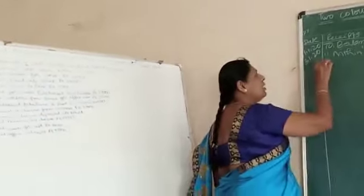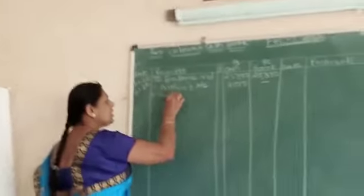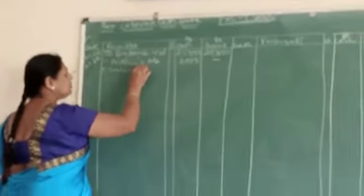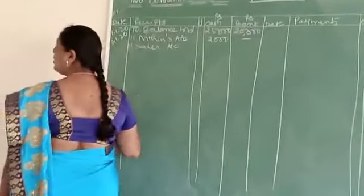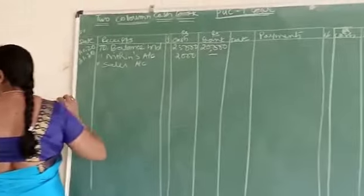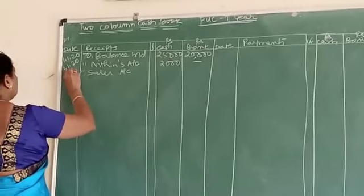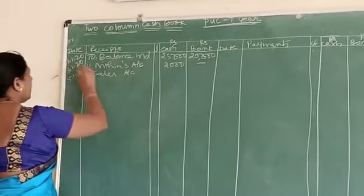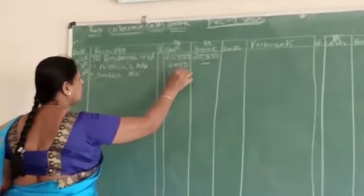Sold books for cash. When you sell the books, cash is coming in. Come to the debit side, two sales account. Write the date 5/1 and write the amount 2,000.